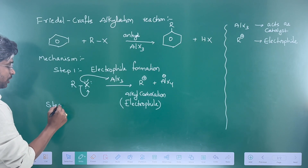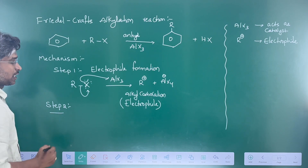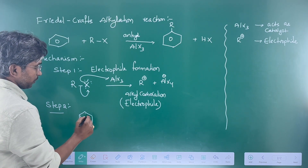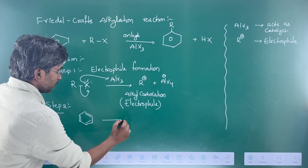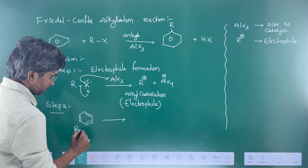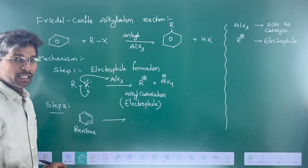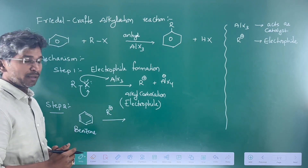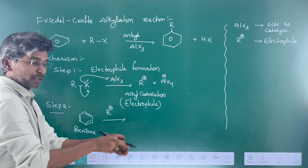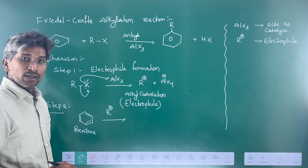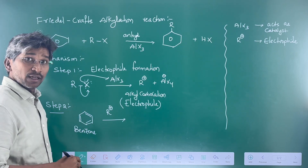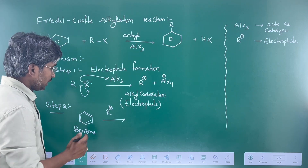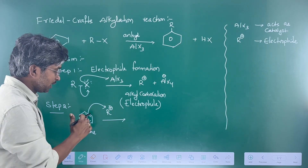Step 2: electrophile attacking step. In step 2, the electrophile R⁺ will be connected to the benzene ring. Benzene is an aromatic compound and can react with R⁺. R⁺ is the electrophile and benzene is acting as a neutral nucleophile. The electrophile, being an electron pair acceptor, takes an electron pair from the benzene ring. Benzene donates electrons to it.